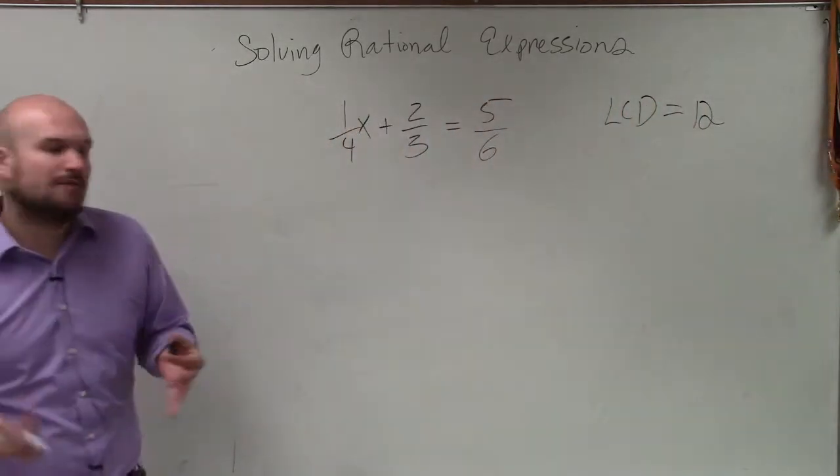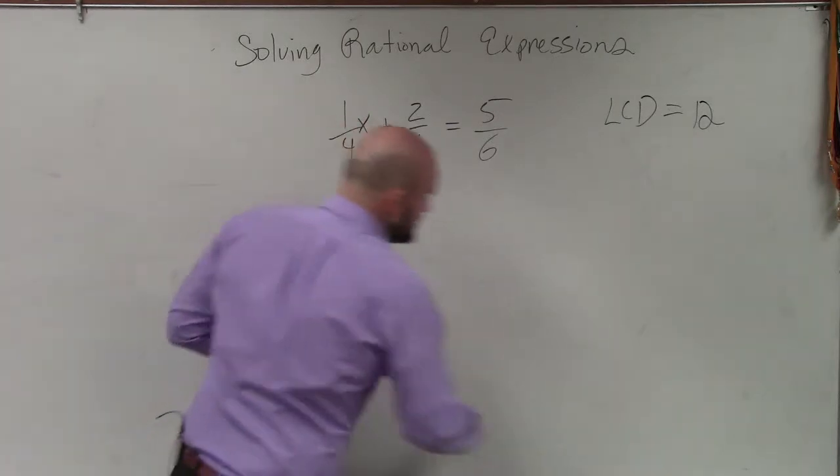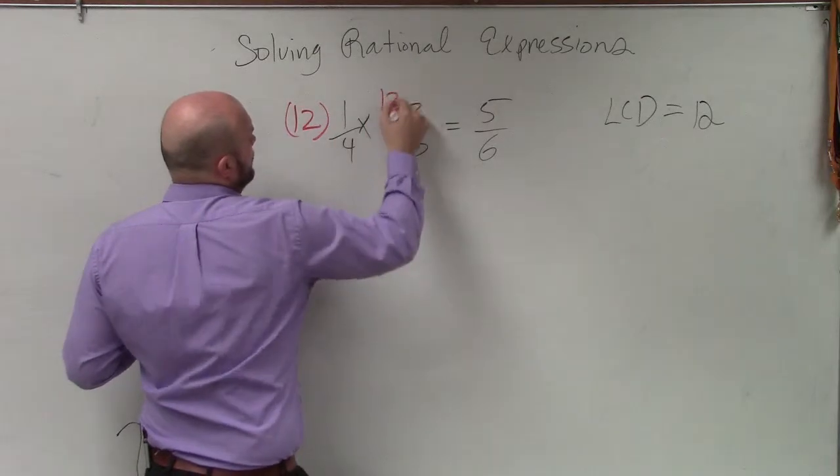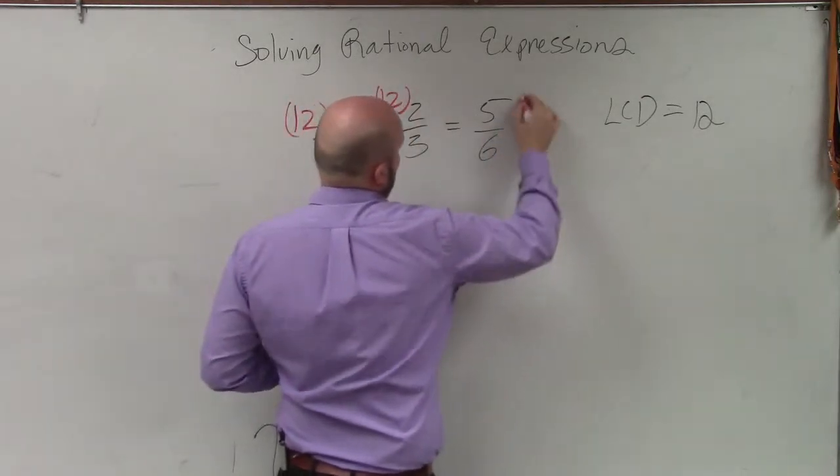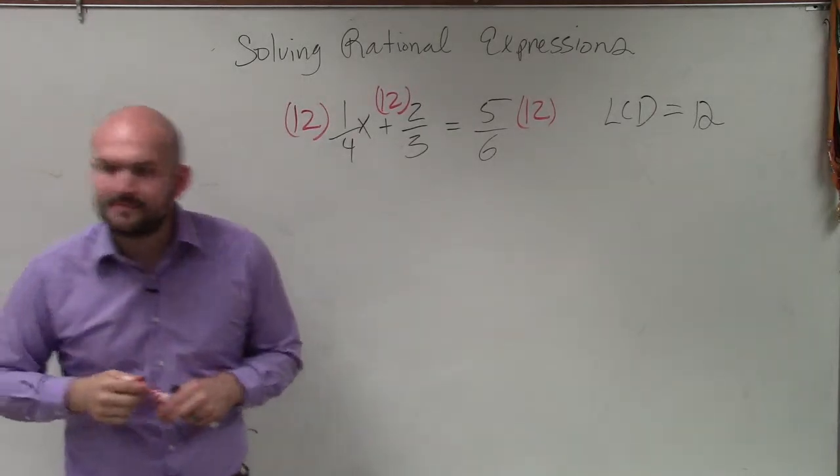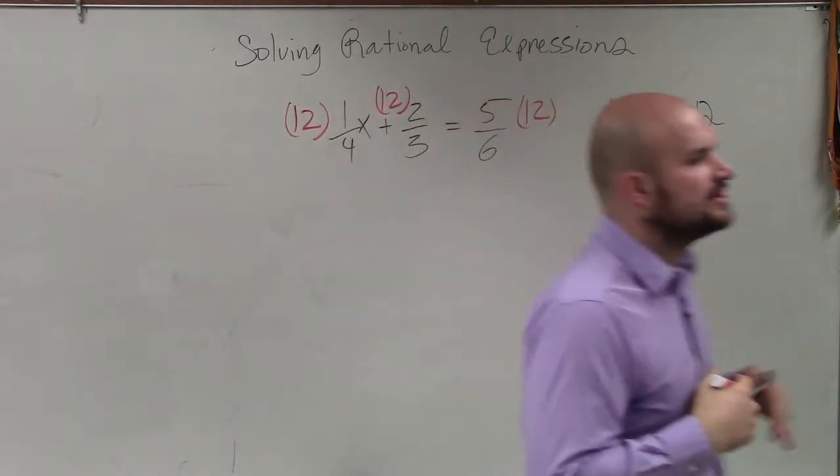So what we do is we take 12 and we multiply our least common denominator times every single one of our terms. Does anybody remember this in any regard? Okay.